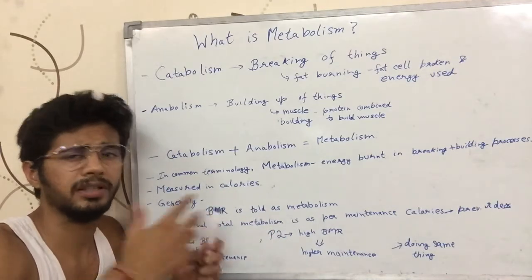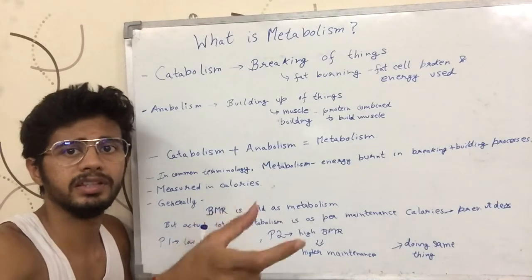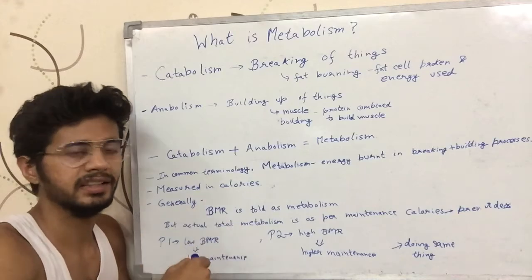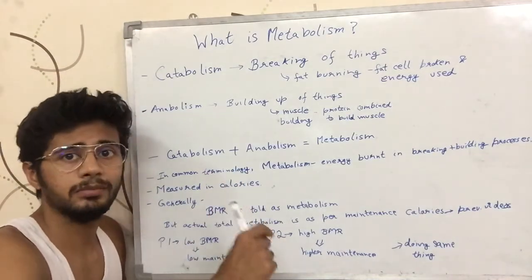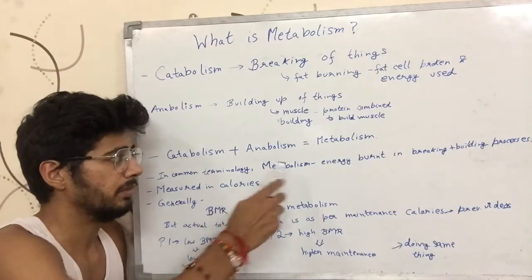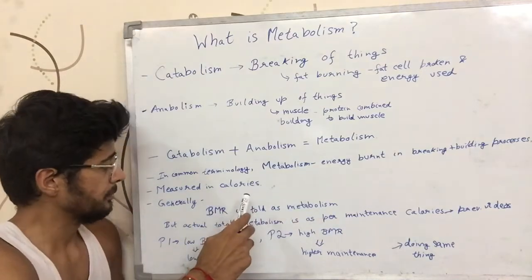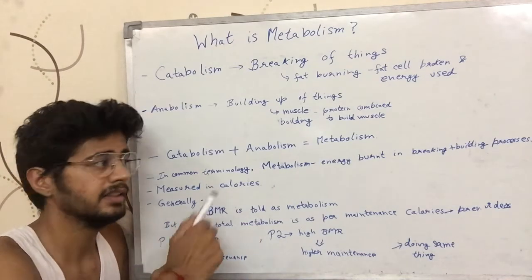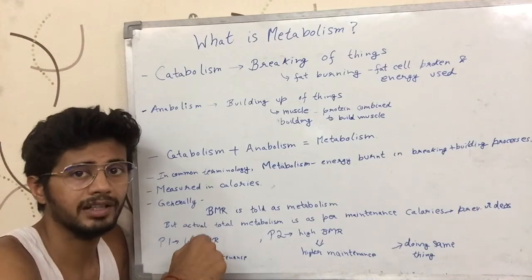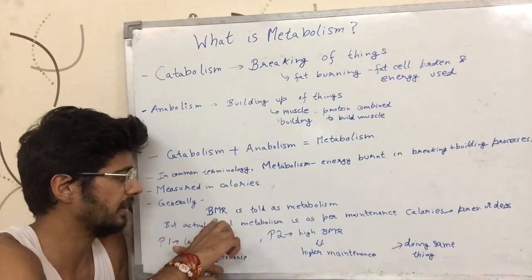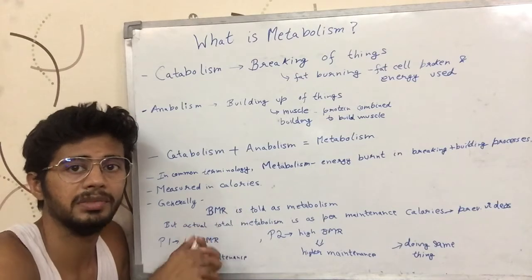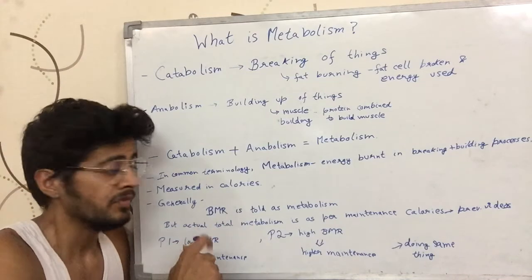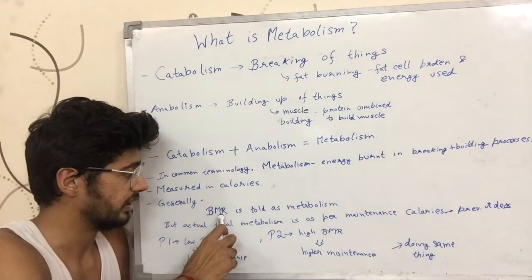In common terminology, people use the word metabolism to denote the energy that was burned by the body to break things down and build things up. We have talked about this — the energy burned by the body is measured in calories, so metabolism is measured in calories. Someone might say, oh, my metabolism is 1500 calories, my metabolism is 2500 calories. Generally, if you ask someone what their metabolism is, the person can tell you their BMR. BMR is basal metabolic rate — the energy that you burn when you are just lying down on a bed doing nothing. I talked about this in my previous video, you can go check it out.